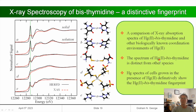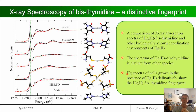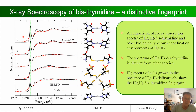Importantly, we grew E. coli in the presence of low levels of mercury and the E. coli spectra looked just like the thymidine coordination, definitively identifying that in that system mercury was binding to the DNA or something very like it.